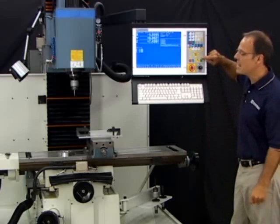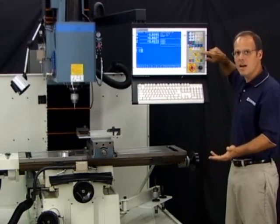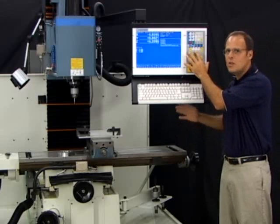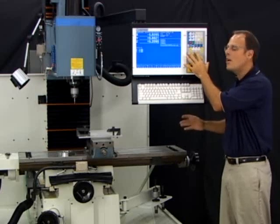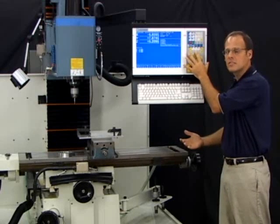Z is pretty easy to understand because Z down or Z negative is down, and Z positive is up. But if I push the Y positive button, which way is that table going to move? Y positive is the tool moving away from us, so the table's going to move towards us. If I choose the Y negative button,